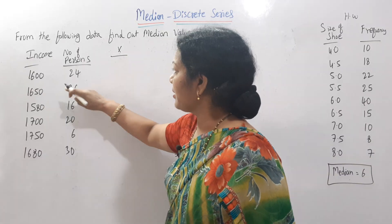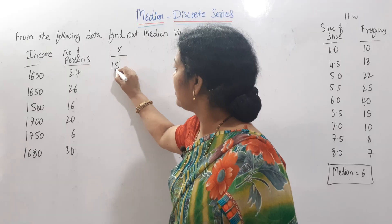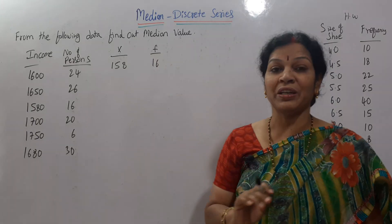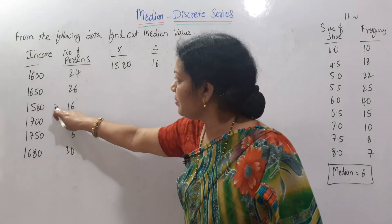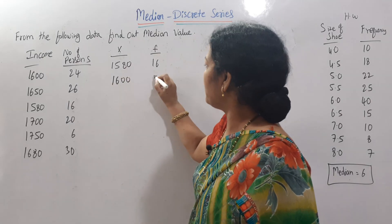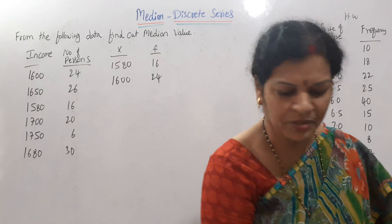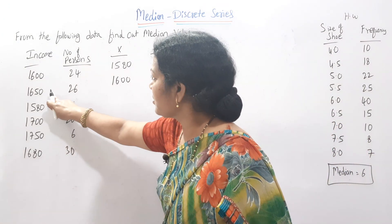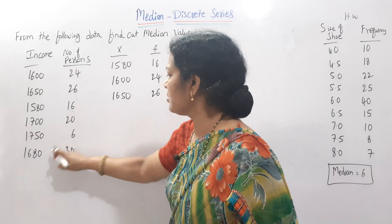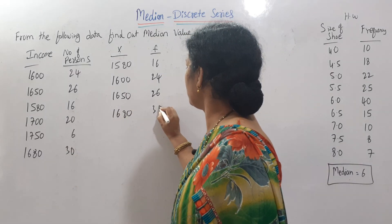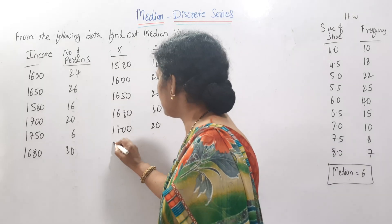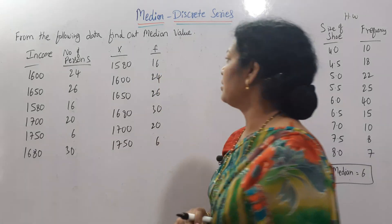So let us work out. Income, or X: the minimum value is 1580, with frequency 16. We write both simultaneously so we don't miss anything. Next: 1600 with frequency 24; then 1650 with frequency 26; then 1680 with frequency 30; then 1700 with frequency 20; and 1750 with frequency 6. Step one — arranging the data in ascending order — is now complete.